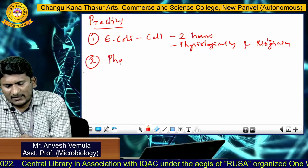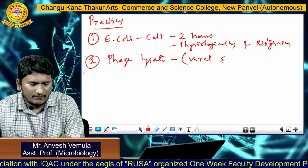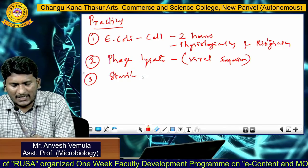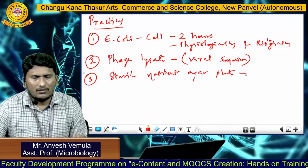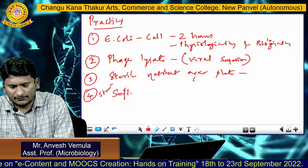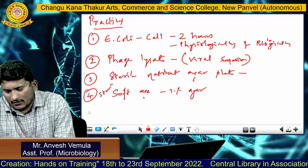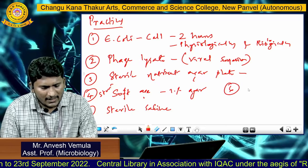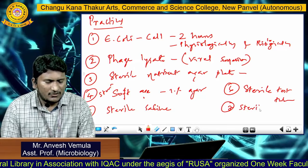The second requirement is phage lysate, also called viral suspension. Third, you require sterile nutrient agar plates, which serve as the basal media for the growth of E. coli cells. Fourth, you require sterile soft agar medium containing 1% agar. The fifth requirement is sterile saline, and you also require sterile test tubes and sterile suspension tubes to carry out this experiment.